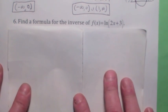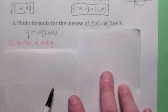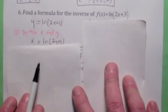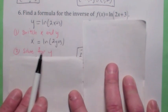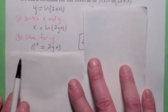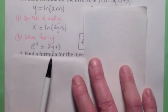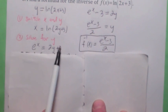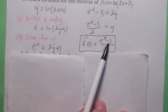Now we'll turn to finding the algebraic formula for the inverse function. To find the inverse, first let y equal f of x, then switch x and y — so you get x equals the natural log of 2y plus 3. To solve for y, use the definition of logarithm: rewrite the logarithm equation as an exponential equation. Then subtract 3 and divide by 2. The inverse function is f inverse of x equals e to the x minus 3, all over 2.